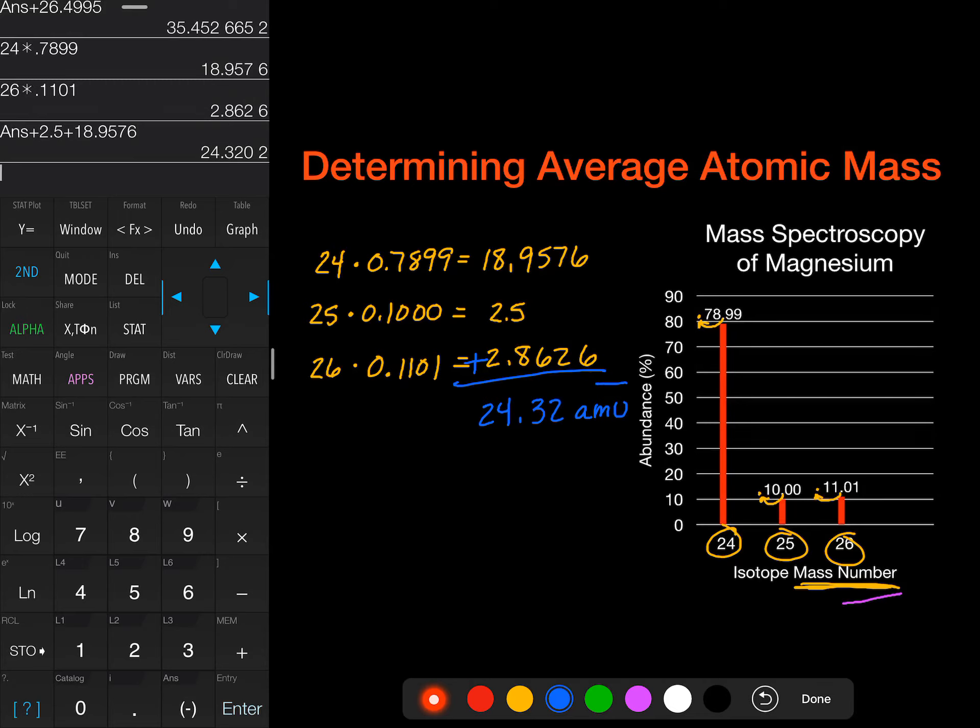Now, if we go back and look at the periodic table, we'll find out that the actual value is 24.30. And we know that the difference is because we don't have those actual isotope masses. And so there's a tiny bit of variation there from what we see on the periodic table. But if you were given data like this, you can still get very close. I hope that video was helpful for you.